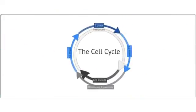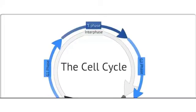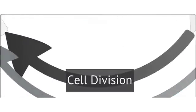The life cycle of the cell is known as the cell cycle. This is the series of events that takes place during a cell's lifespan. There are two main stages to the cell cycle: interphase and cell division.